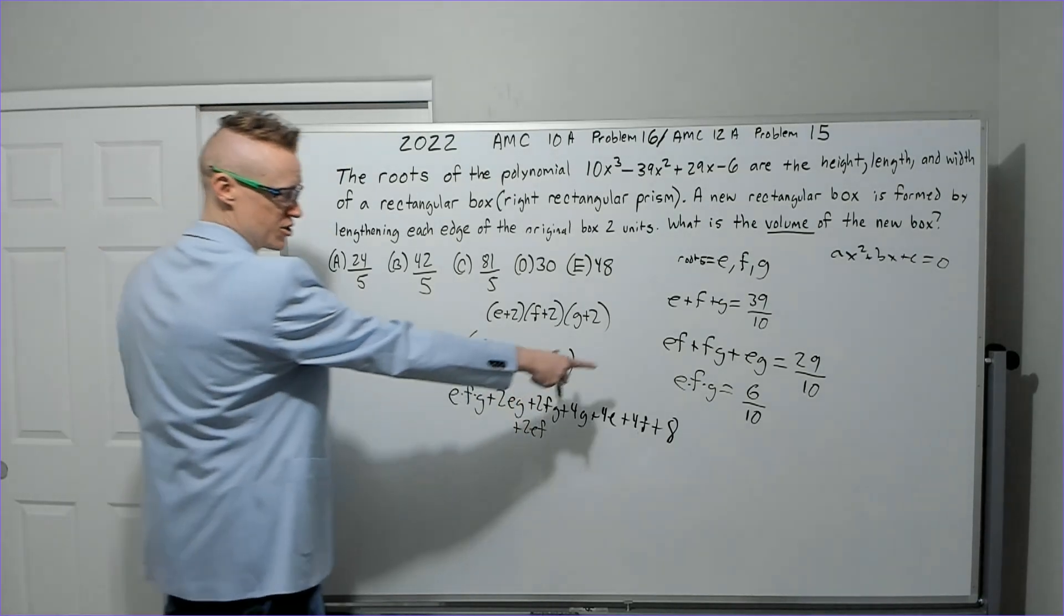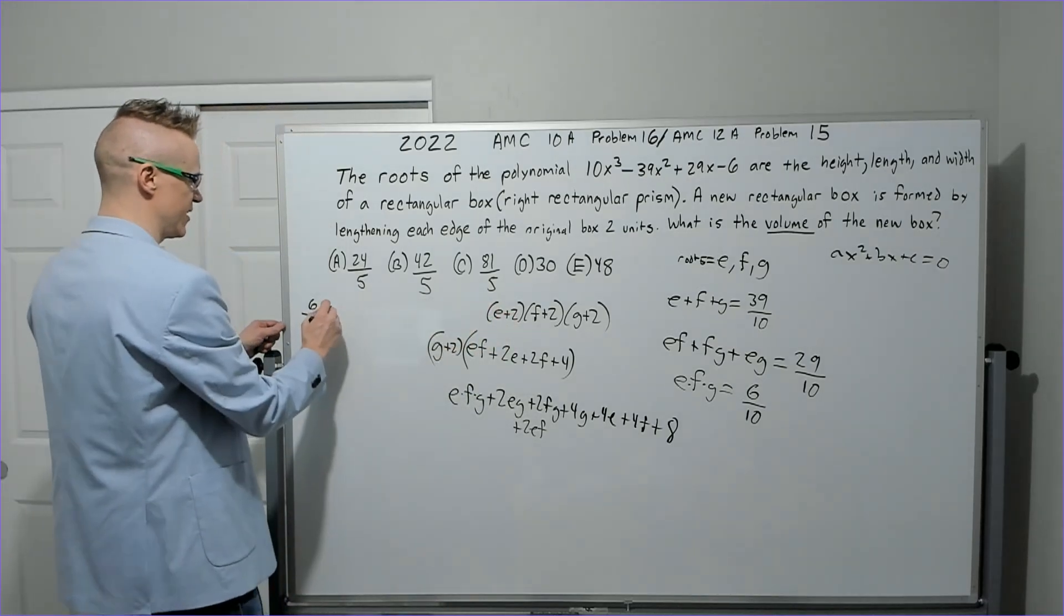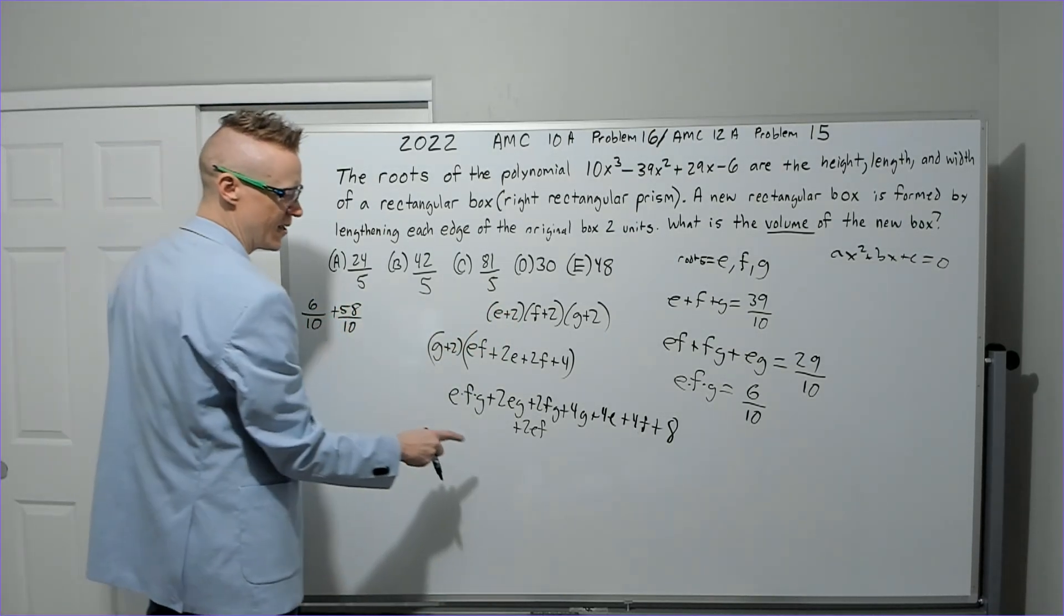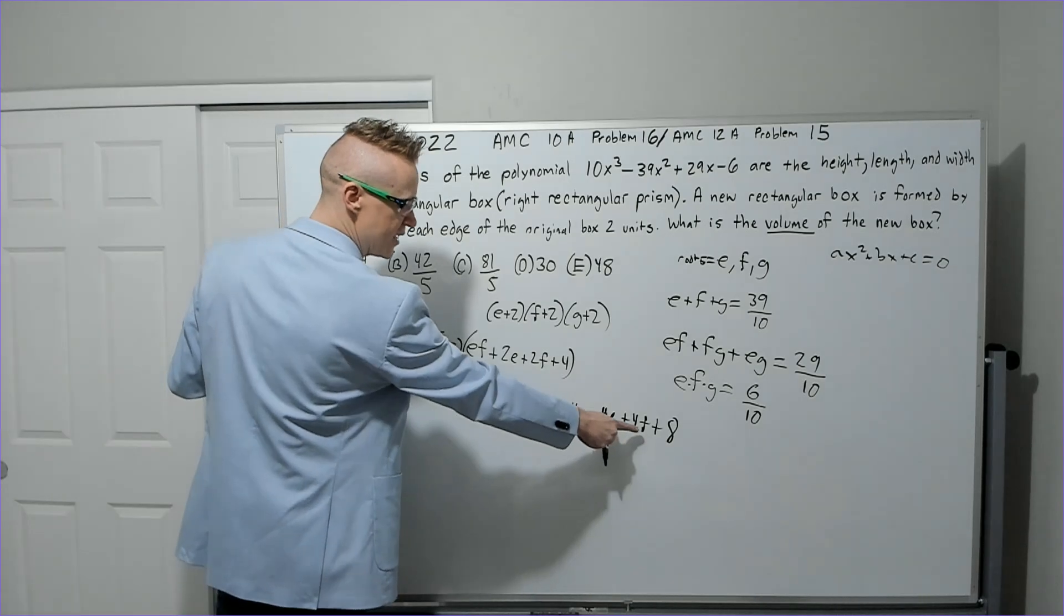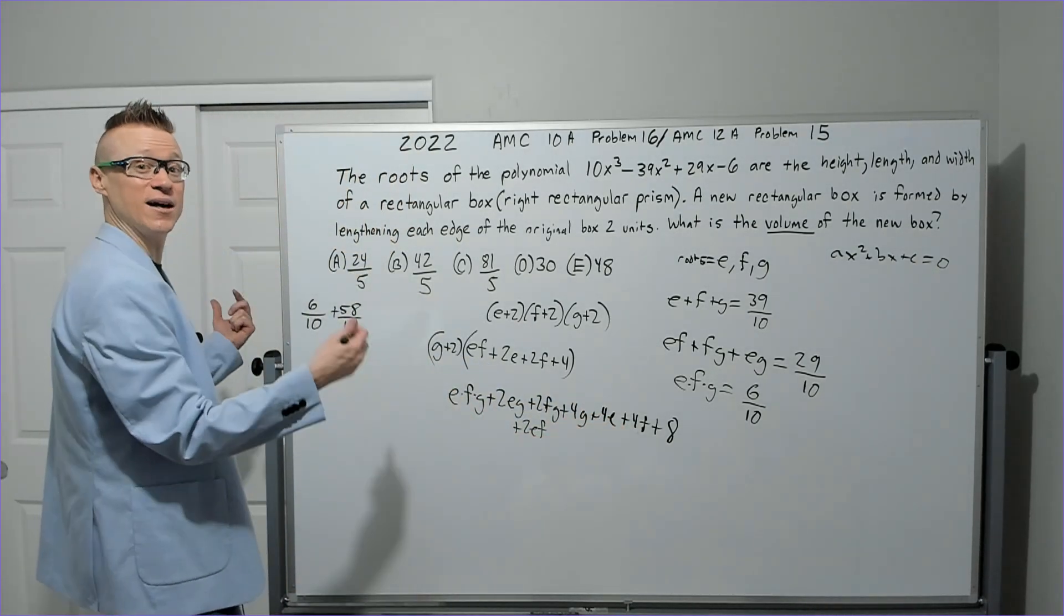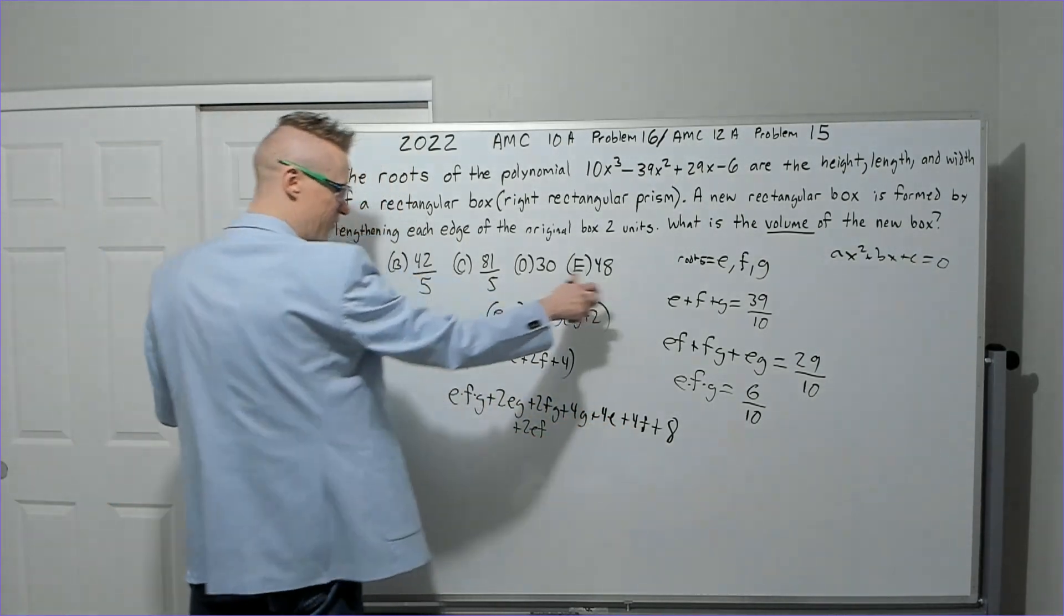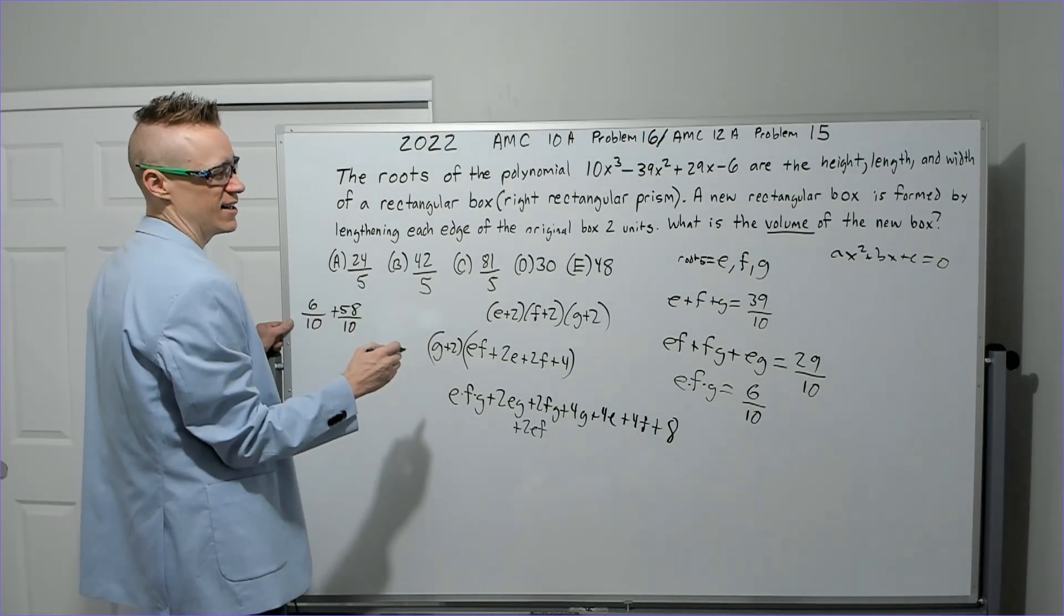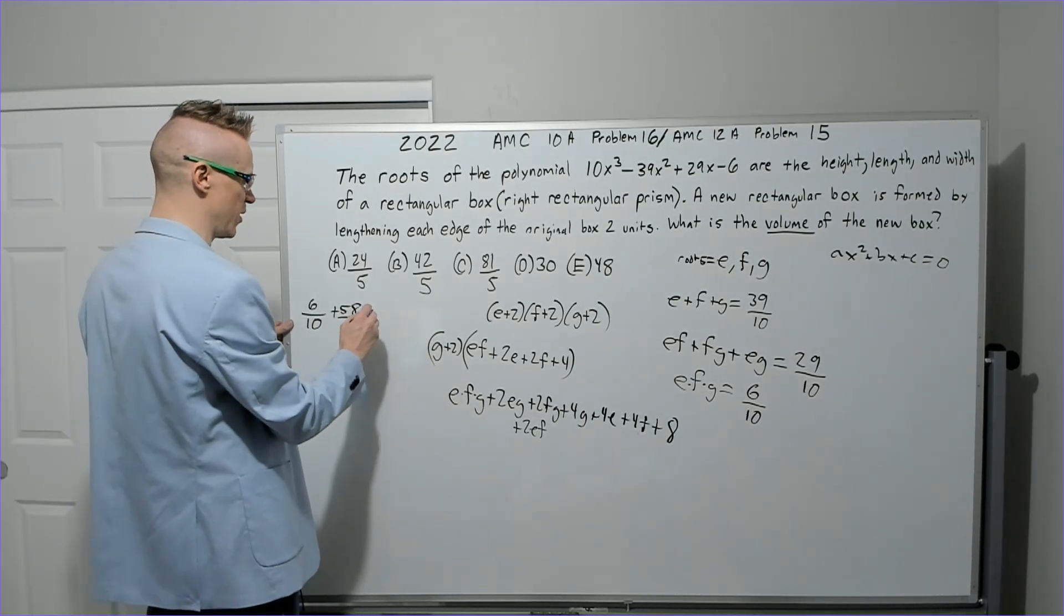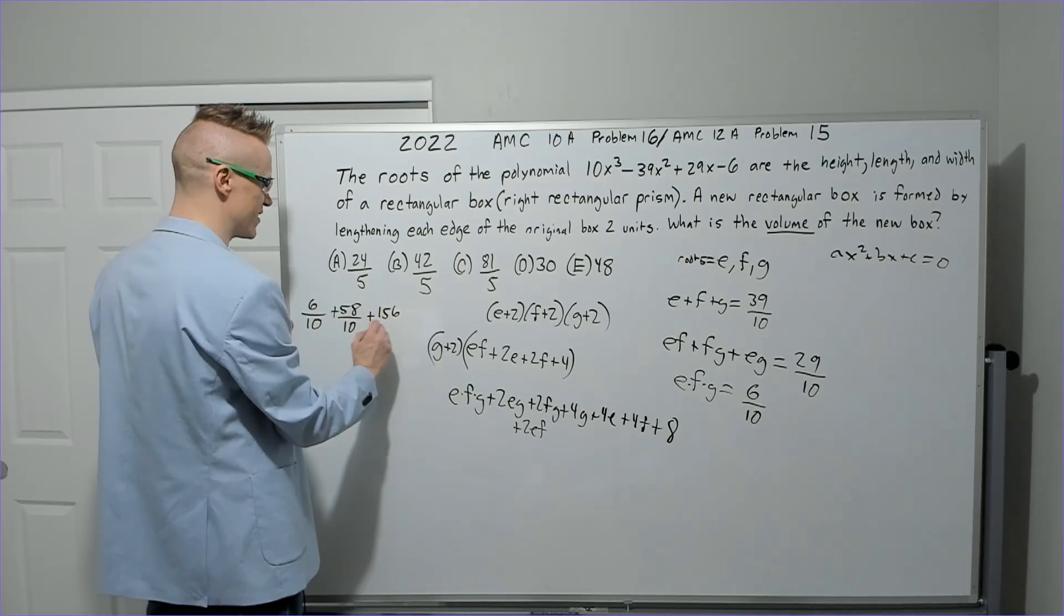So now what do we do? efg is 6/10. Then this 2eg, fg, and ef is two times the pairwise product, so you're going to get 58 over 10. Then you're going to have 4g, 4e, and 4f—that's 4 times (g + e + f). Four times 39 is 78 times 2, which is 156 over 10.